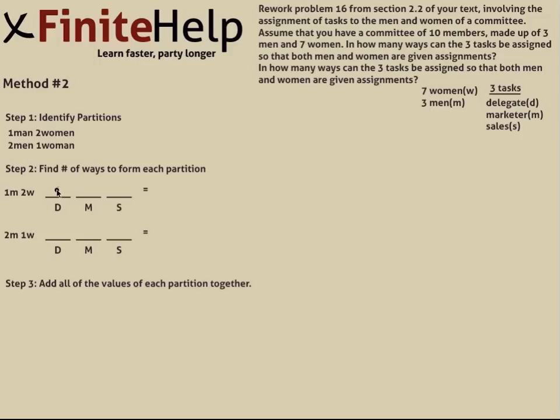Step 2: we find the number of ways to form each partition. For one man and two women, there's three men to choose from, so that's 3. Now two women, there's seven to choose from, so that's 7, and then you have 6 left. Multiply that together and you get 126. For two men and one woman, any of the first three men can be chosen, then 2 left, and then you can have any of the seven women for the third slot. That gives you 42.